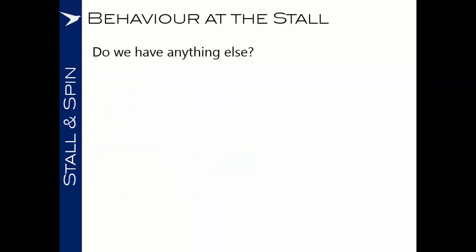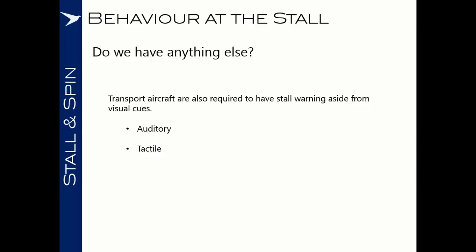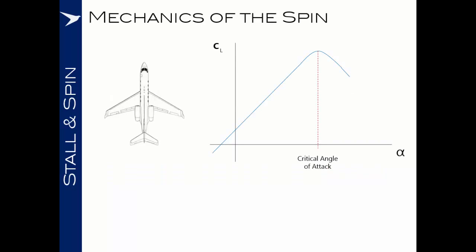Transport aircraft are also required to have stall warning aside from visual cues, including an auditory warning and tactile feedback. There may be a voice or alarm warning of an impending stall, usually set to occur just before the critical angle of attack is reached, and there may be a stick shaker or stick pusher providing tactile feedback. The onset of any of these is an indication not to continue increasing the angle of attack.